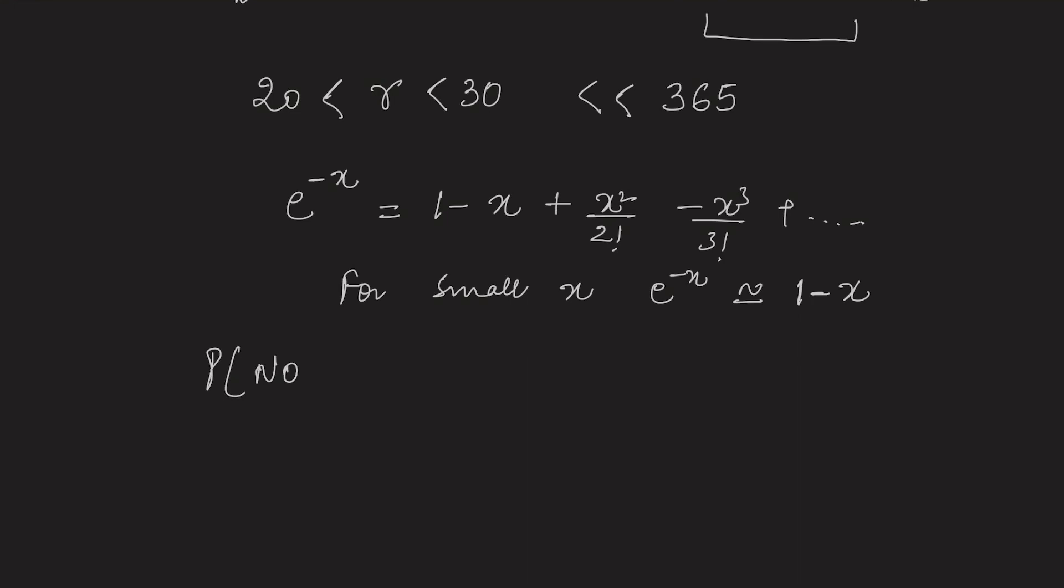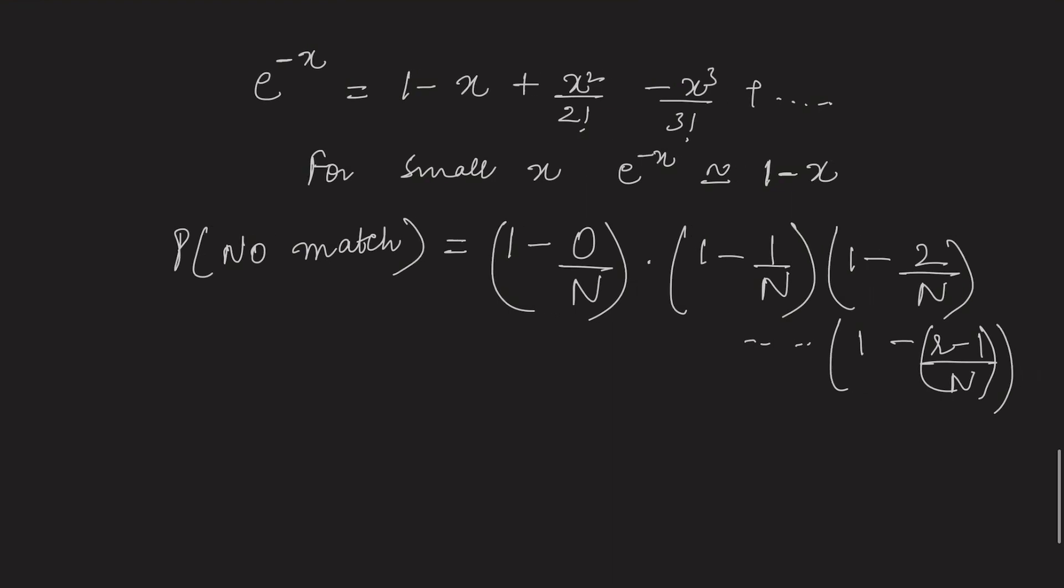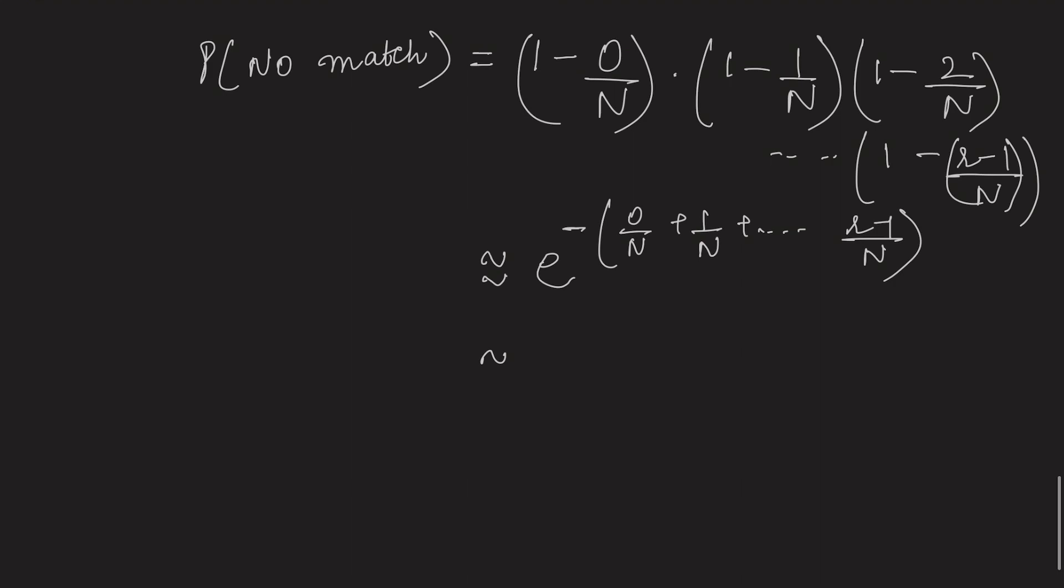Now, we will write the probability of no match again in a different form like 1 minus 0 by n, times 1 minus 1 by n, times 1 minus 2 by n up till 1 minus r minus 1 by n. This is 1 minus x, so it can be approximated as e to the power minus 0 by n plus 1 by n up till r minus 1 by n. That can be written as e to the power minus r times r minus 1 by 2n.